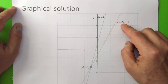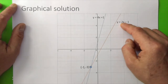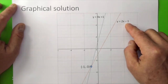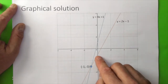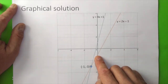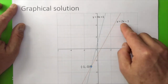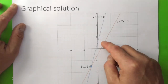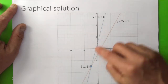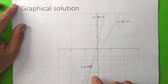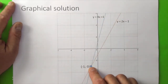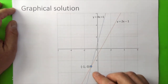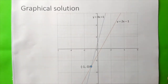Similarly, for y equals 2x minus 1, the y-intercept is (0, minus 1). Starting from that point, with a run of 1 and rise of 2, once you have drawn the two lines, the point where they meet at (minus 1, minus 3) is actually the solution to the simultaneous equations.